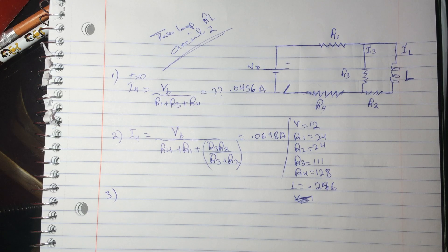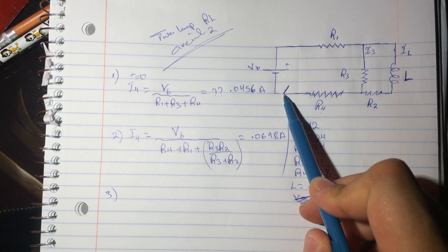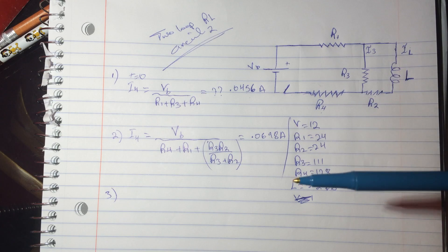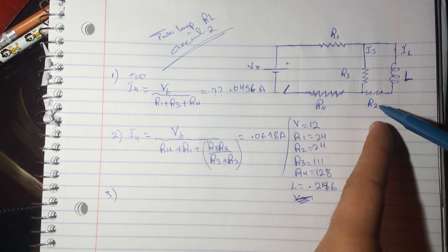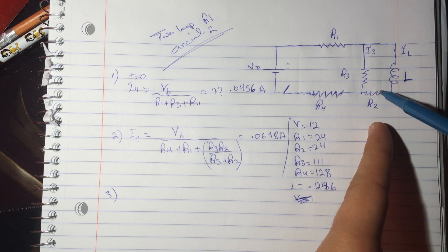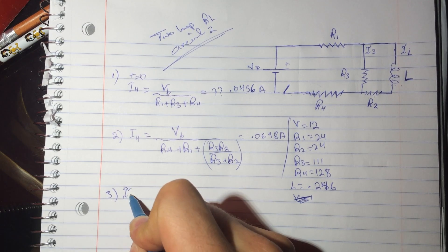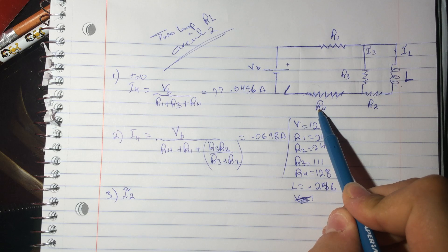Question three: what is IL at infinity — the current through the inductor after the switch has been closed for a very long time? Since the inductor acts like a wire at steady state, and R2 and L are in series, the current through R2 equals the current through the inductor. So we need to find I2.